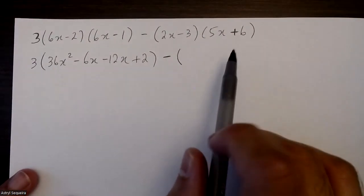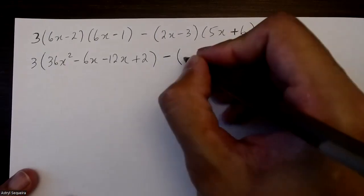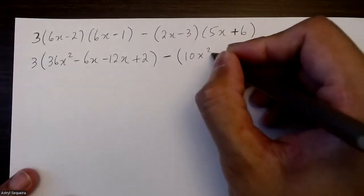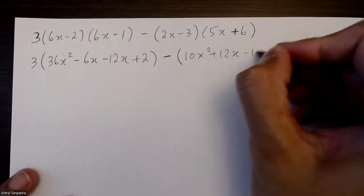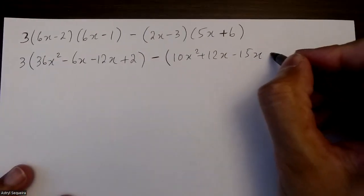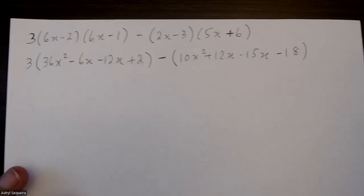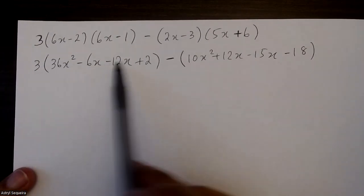That's 10x squared plus 12x minus 15x minus 18. Next I'll combine like terms inside the brackets.